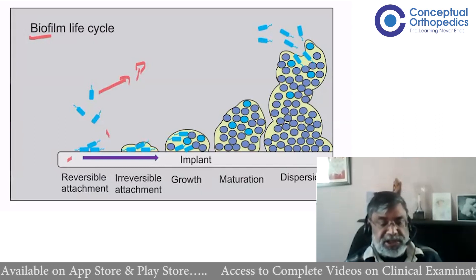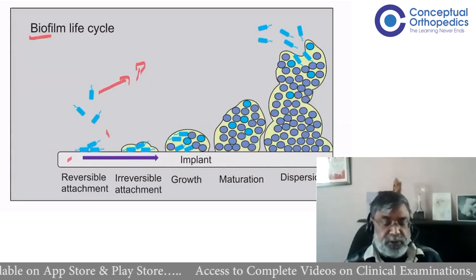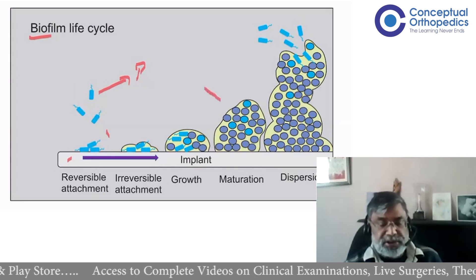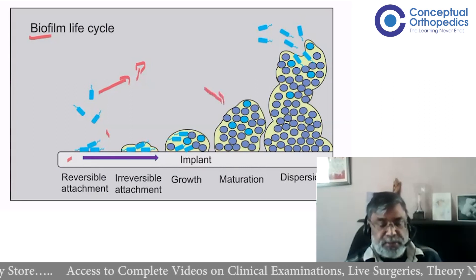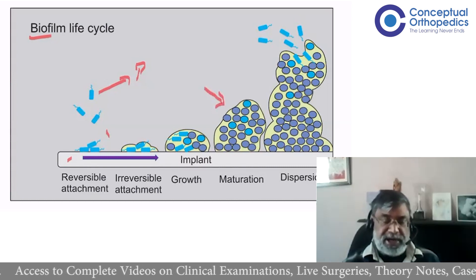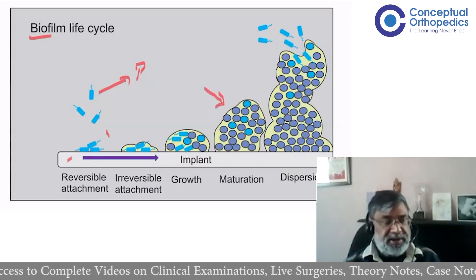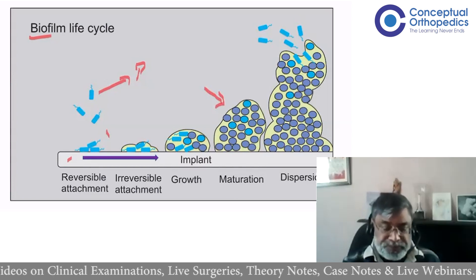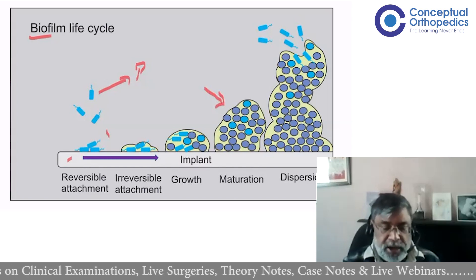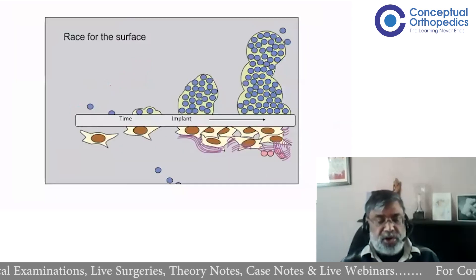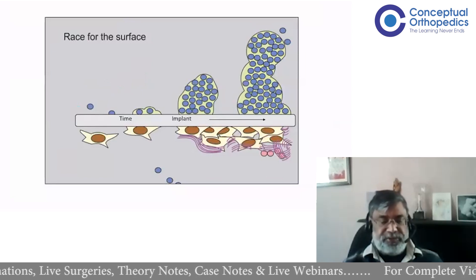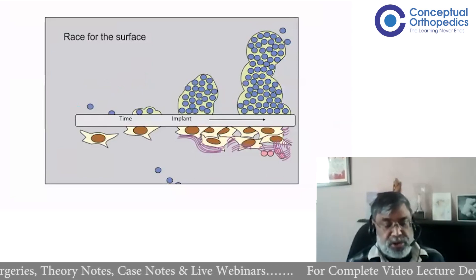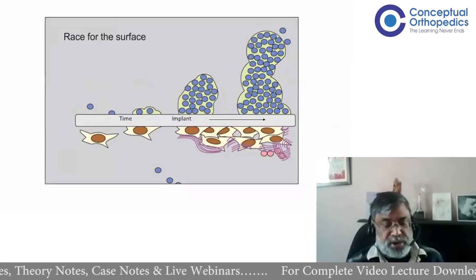Then the bacteria start secreting a protective layer of glycocalyx or polysaccharide around them. Inside the colony, they start changing their phenotype and genotype so that they are more resistant to antibiotics. They cannot be attacked by the host defense system or antibiotics, making the infection very difficult to treat.